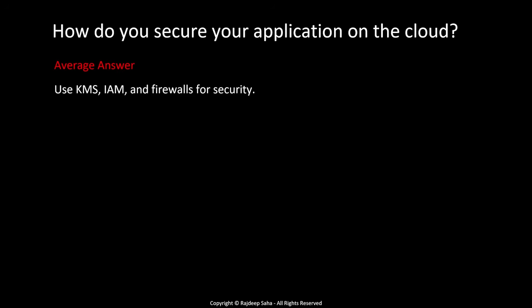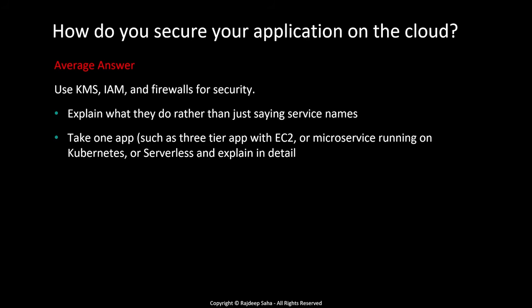Next question — this one comes in almost all cloud interviews: how do you secure your application on the cloud? The average answer would be: use KMS, IAM, and firewalls for security. The problem is you should explain what they do rather than just saying service names, and then take one application — such as a three-tier app with EC2, or a microservice running on Kubernetes or serverless — and explain in detail.